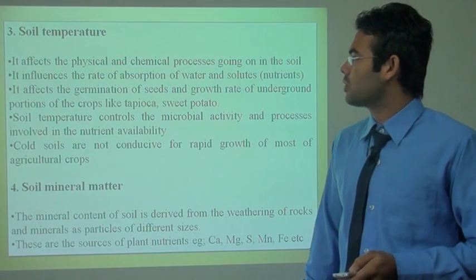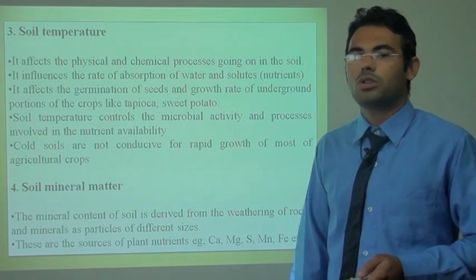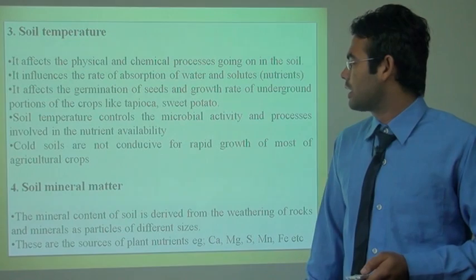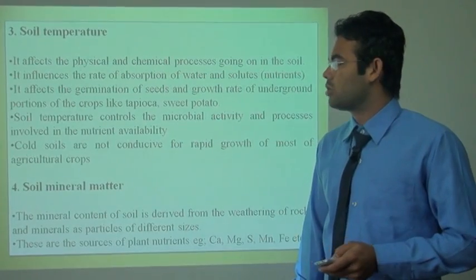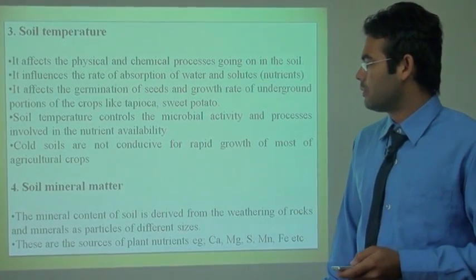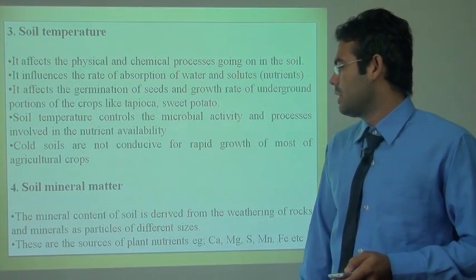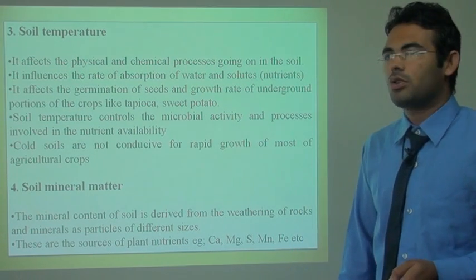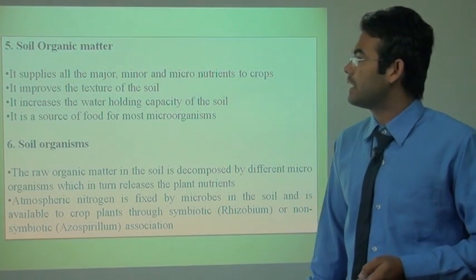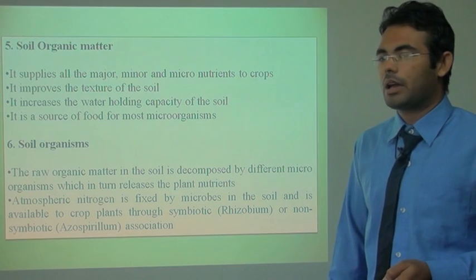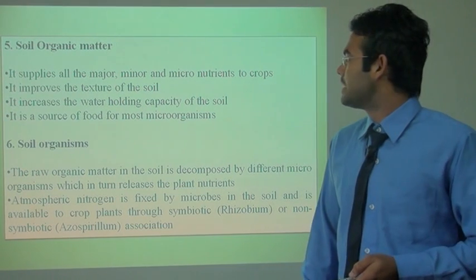Soil temperature is essential for nutrient availability and breaking down insoluble minerals. It controls microbial activity. Cold soils do not support rapid growth of most agricultural crops. Soil mineral matter is derived from the weathering of rocks and minerals of different particle sizes, serving as a source of plant nutrients like calcium, magnesium, sulfur, manganese and iron. Soil organic matter supplies all major, minor and micronutrients to crops, improves soil texture, increases water holding capacity and serves as food for microorganisms.